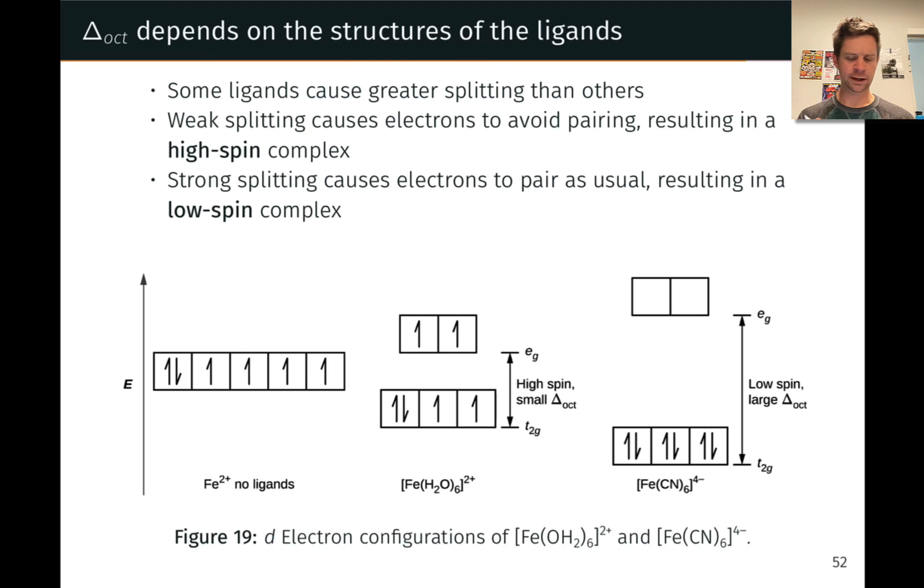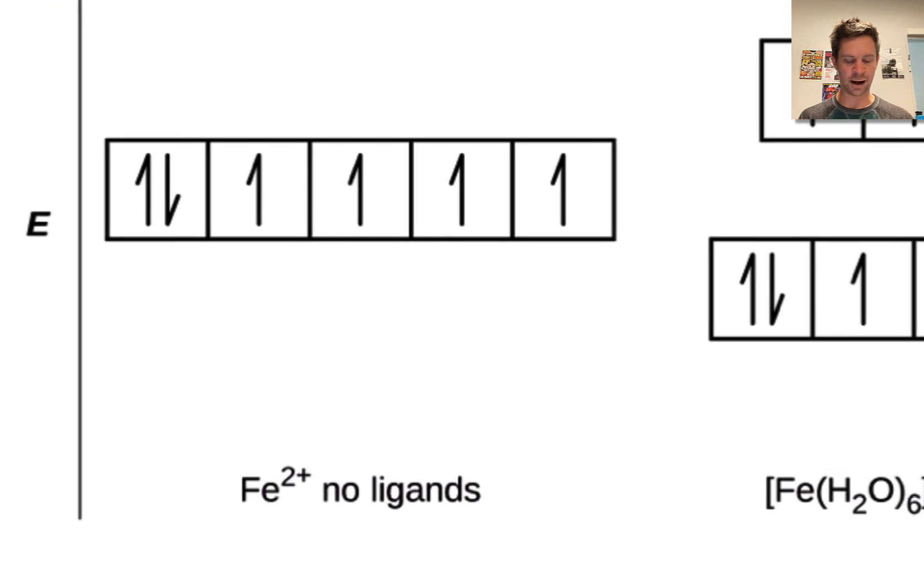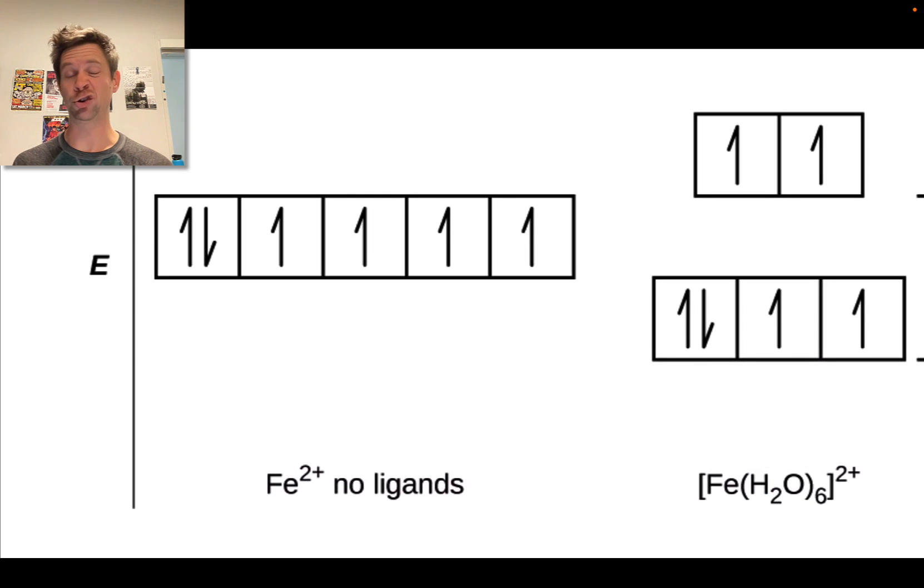Let's start by reviewing the basic idea of crystal field theory and crystal field splitting. Let's imagine we started with just a bare iron 2 cation first, no ligands, just bare iron 2 plus.